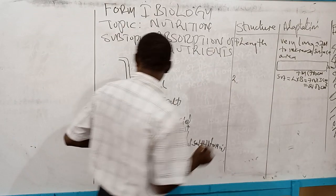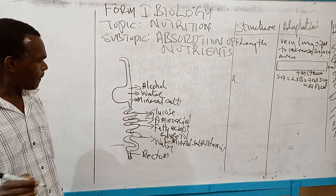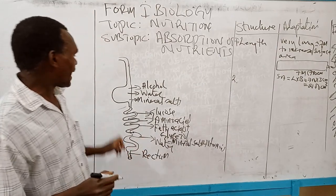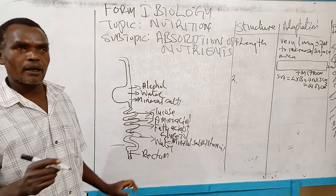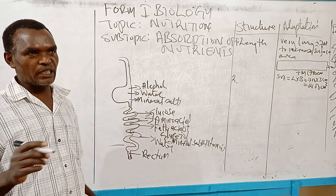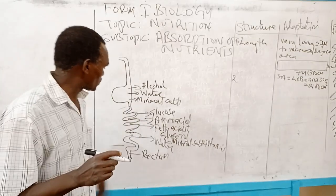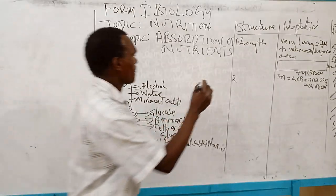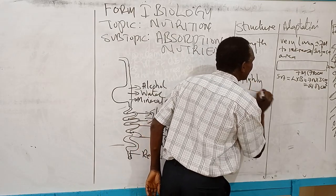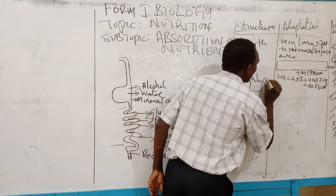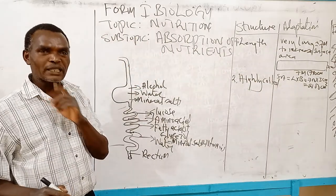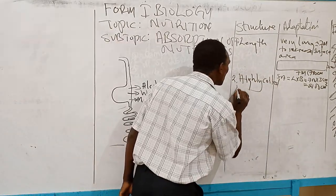Also, as you look at the alimentary canal, it is not straight — it is coiled. And not just one coil; it is highly coiled, like the springs used in most machines. I want to put a remark here: say it is highly coiled, not just folded. There is a difference between coiled and folded.